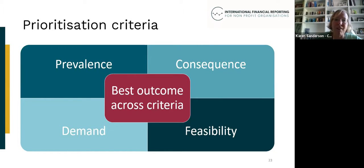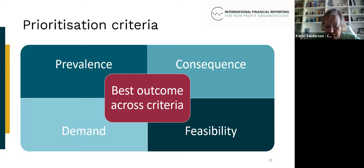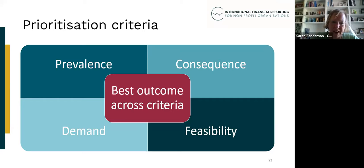The first criterion is prevalence — how widespread is the issue globally? Do we see it in every country, every continent? What's the significance of it? We've also looked at consequence: thinking about the users of financial statements, if we don't address the issue, would it impair the ability of readers to obtain useful information for accountability and decision-making purposes?